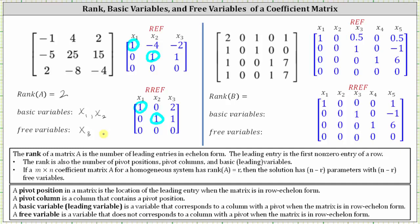Now take a look at our second example where we assume the variables are x sub one through x sub five. Looking at row echelon form, we begin by identifying the leading entries, which is the first nonzero entry in each row. We have leading entries in row one column one, in row two column three, and in row three column four. Looking at reduced row echelon form, notice how the leading entries are the same.